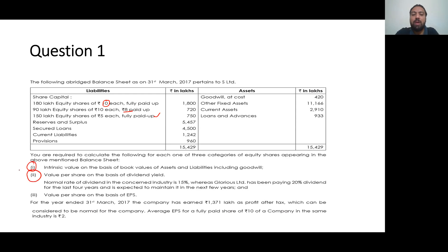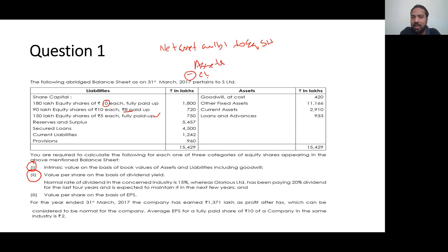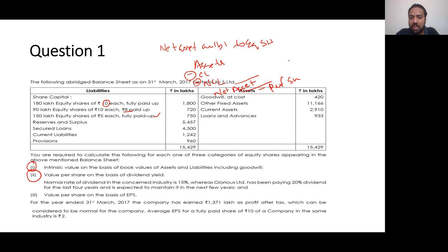We will discuss the intrinsic value and calculate the value per share based on it. Intrinsic value is the net asset available to equity shareholders. This is: assets minus current liabilities minus non-current liabilities. The company's net asset is available to equity shareholders. Intrinsic value per share equals net assets divided by number of shares.